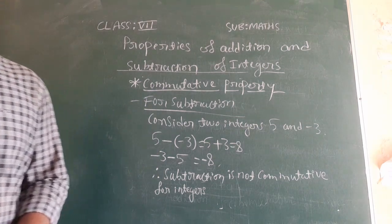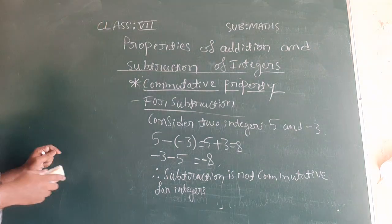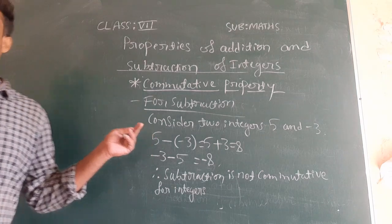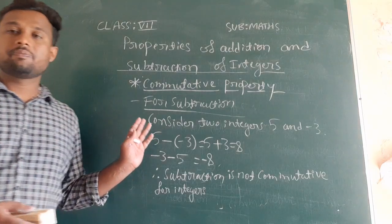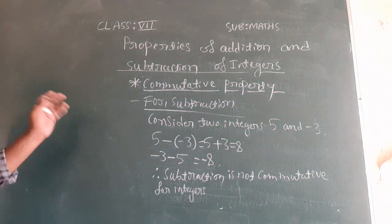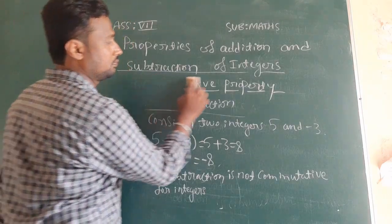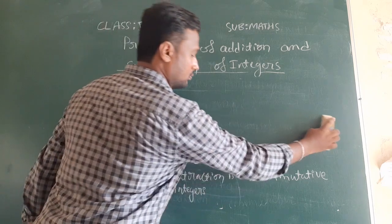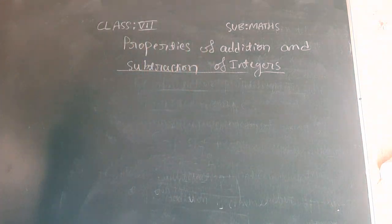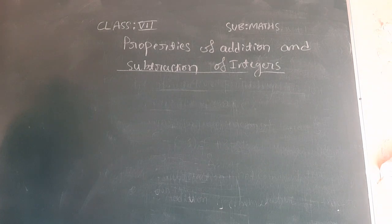This is about commutative property. Now we will see associative property. Write this example, pause the video and write, and consider another two examples with random integer values.